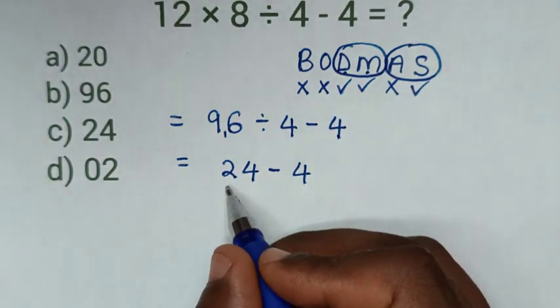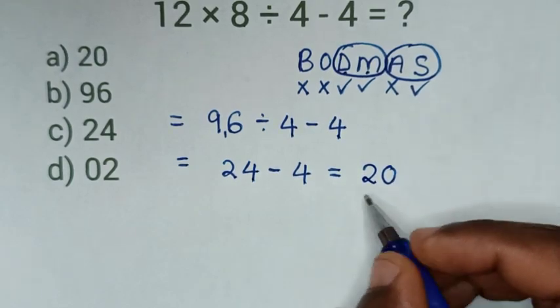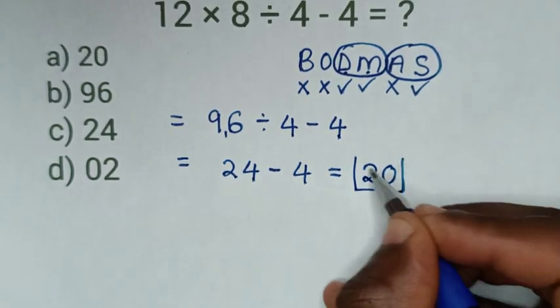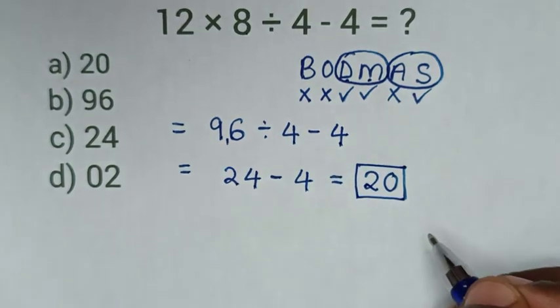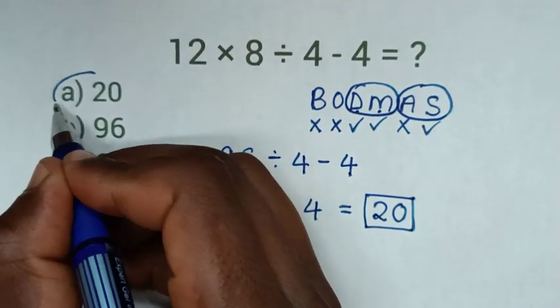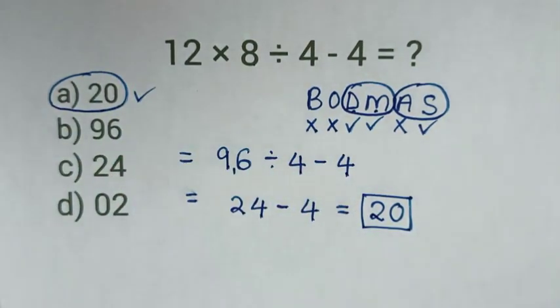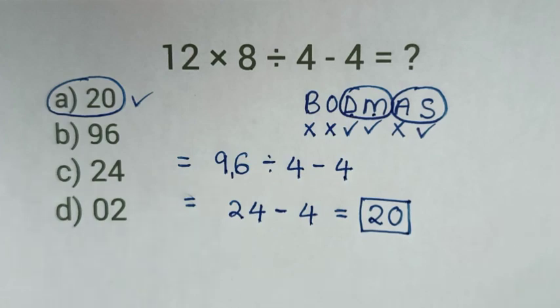We have here subtraction of 24 minus 4, which is equal to 20. So this is our final answer. Selecting the multiple choice, it is A. Thank you. Don't forget to subscribe to my channel.